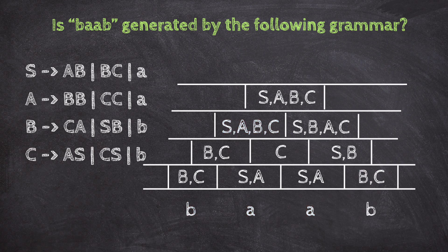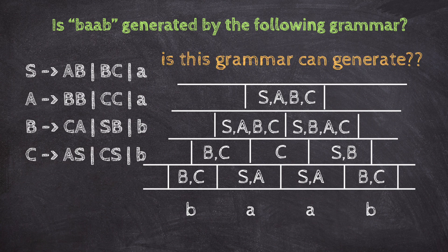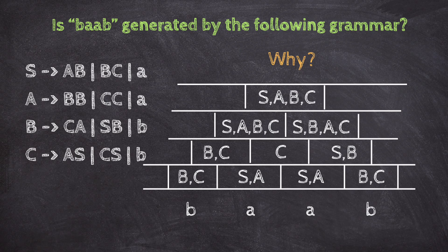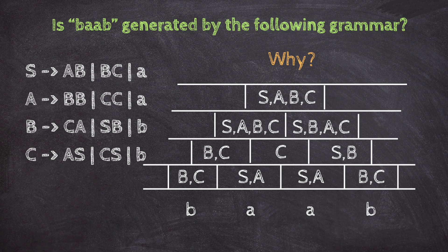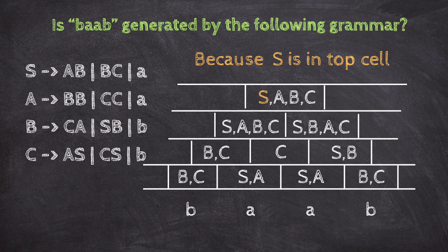This is the finish of the CYK algorithm, but is this grammar able to generate BAAB? Yes. Why? Here's how you check. Just look at the top cell of our CYK table. If the start symbol S is there, then yes, it's possible. In this case, S is in the top cell, so the answer is yes, BAAB can be generated by the grammar.